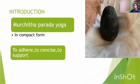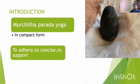Coming to the introduction. This is a Murchita Parada Yoga. What do you mean by Murchana? Murchana is the act of imbibing certain therapeutic properties to purify the mercury in order to fit for consumption through various pharmaceutical procedures, and the product is in a compact form. The word Pottali is originated from the root word 'port' or 'put', meaning to adhere, to concise, or to support.